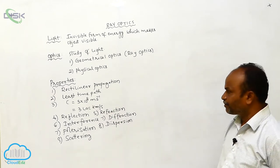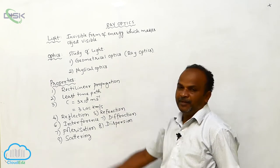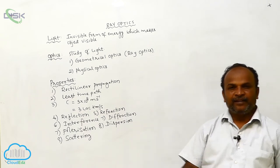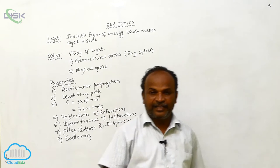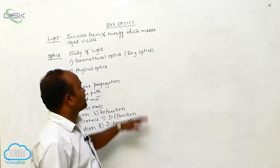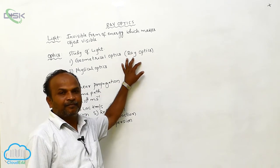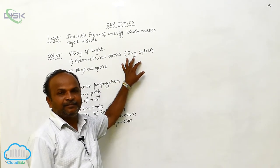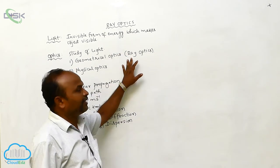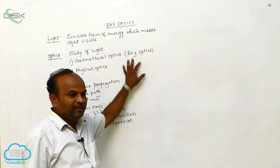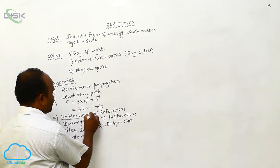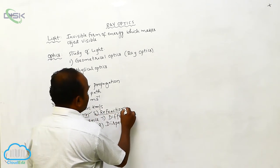Next, what is geometrical optics, or ray optics? The study of light by treating the light energy as a ray is called ray optics. In ray optics, it is very easy to understand what is reflection and what is refraction.